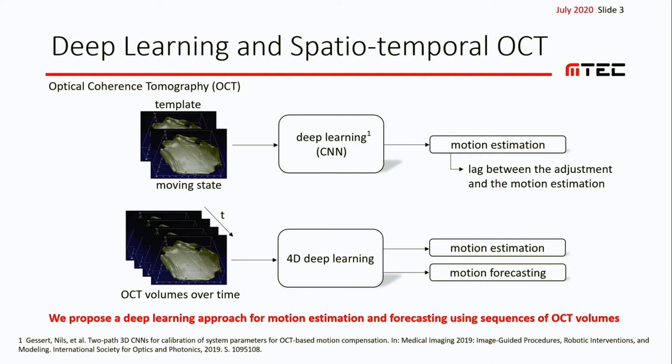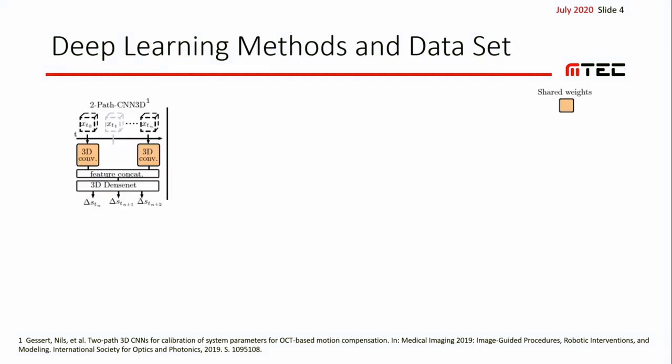Let's take a closer look at the different deep learning models that we use. The input for our models is a sequence of OCT volumes called X_T, and the output is the current motion vector delta_S_N, as well as the future motion vectors delta_S_{N+1} and delta_S_{N+2}.